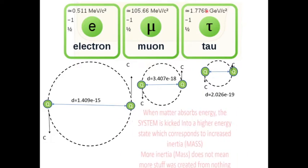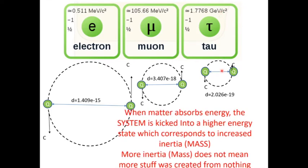Energy and inertia are very highly correlated quantities. When a system absorbs energy, it gets shot into a higher energy state with higher inertia. So energy and inertia are not interchangeable according to E equals MC squared — they are correlated. More inertia does not mean more stuff was created from nothing. Even though a higher-energy state has higher inertia, there is not more stuff there. Other sources show these particles as larger because they have higher mass — that is completely backwards. This is a smaller particle, and an ever smaller particle still.